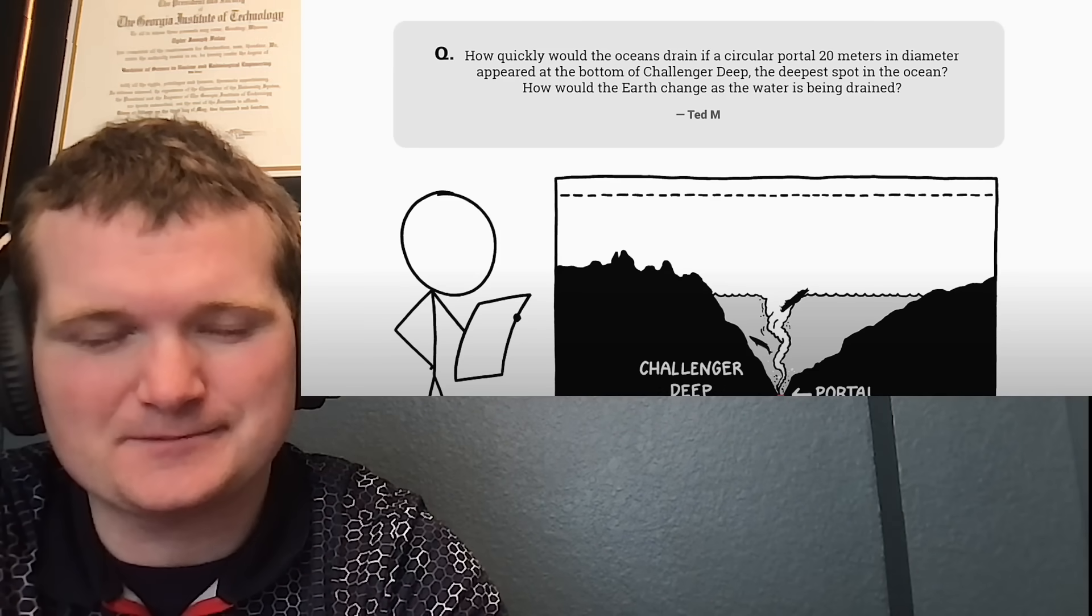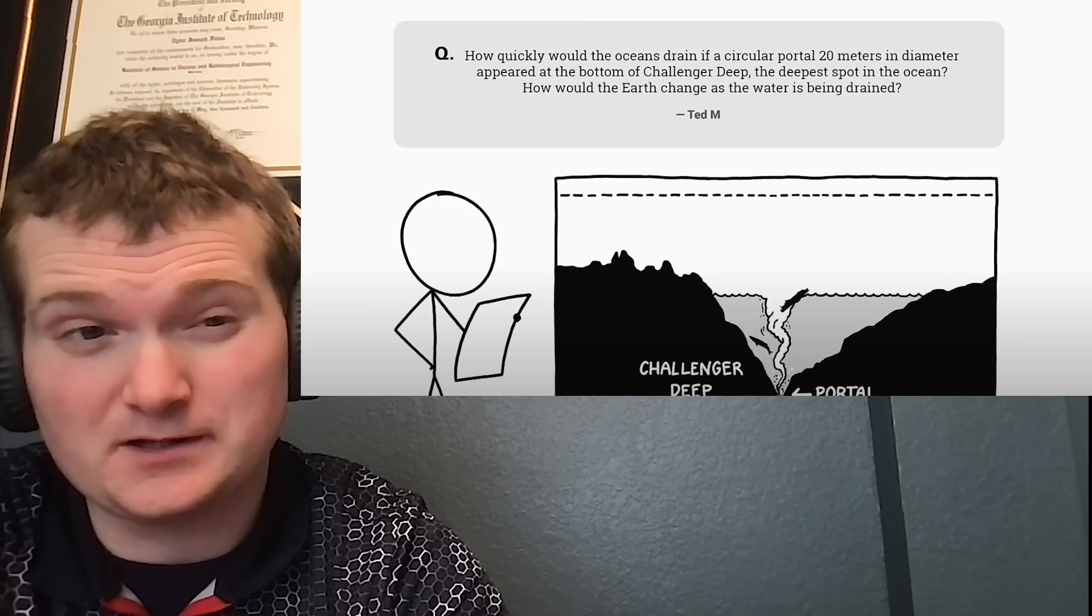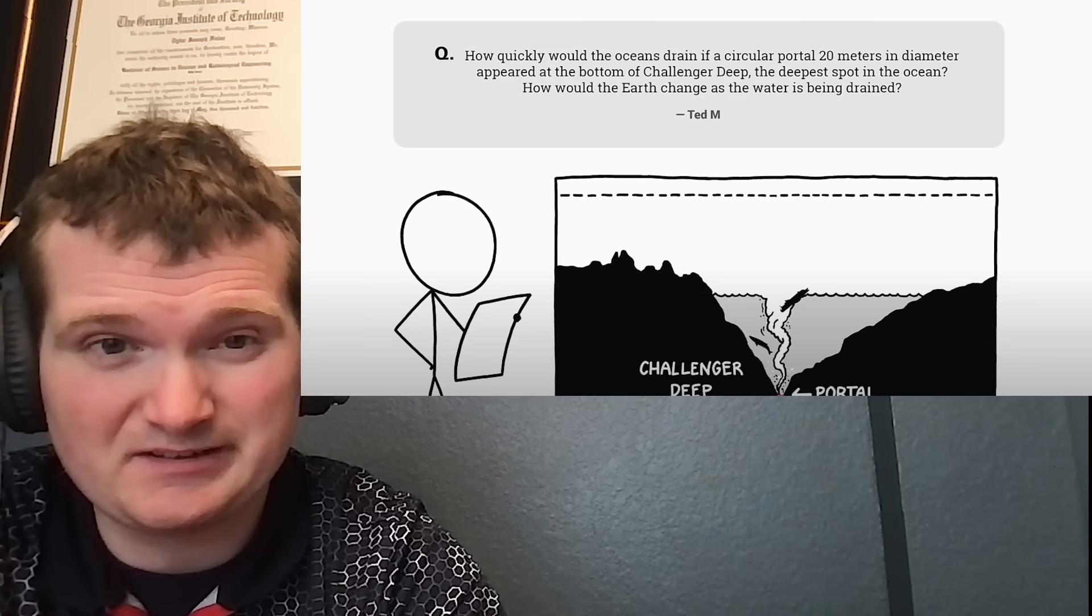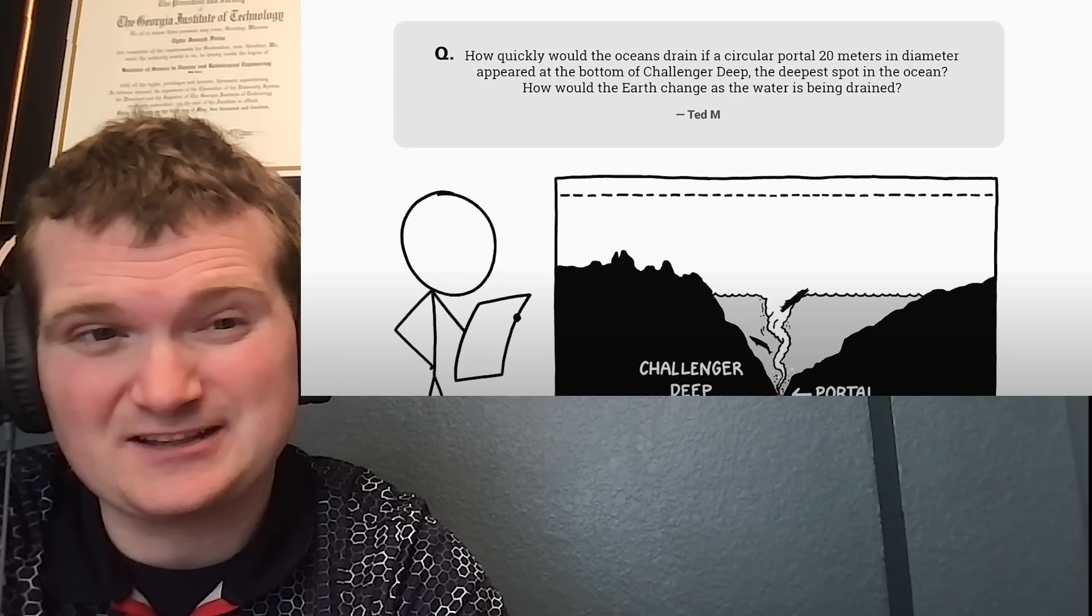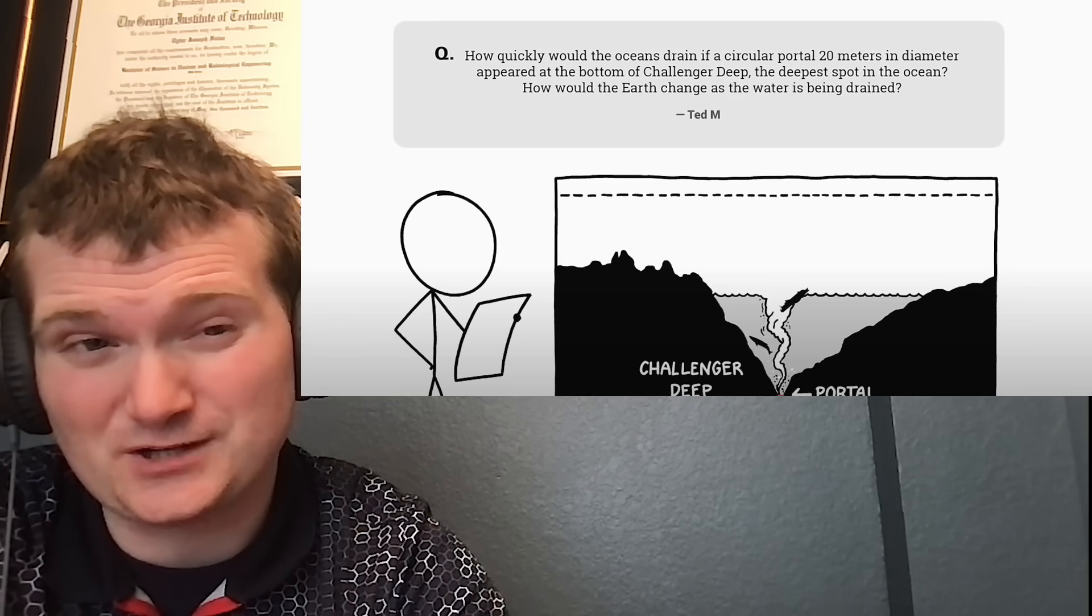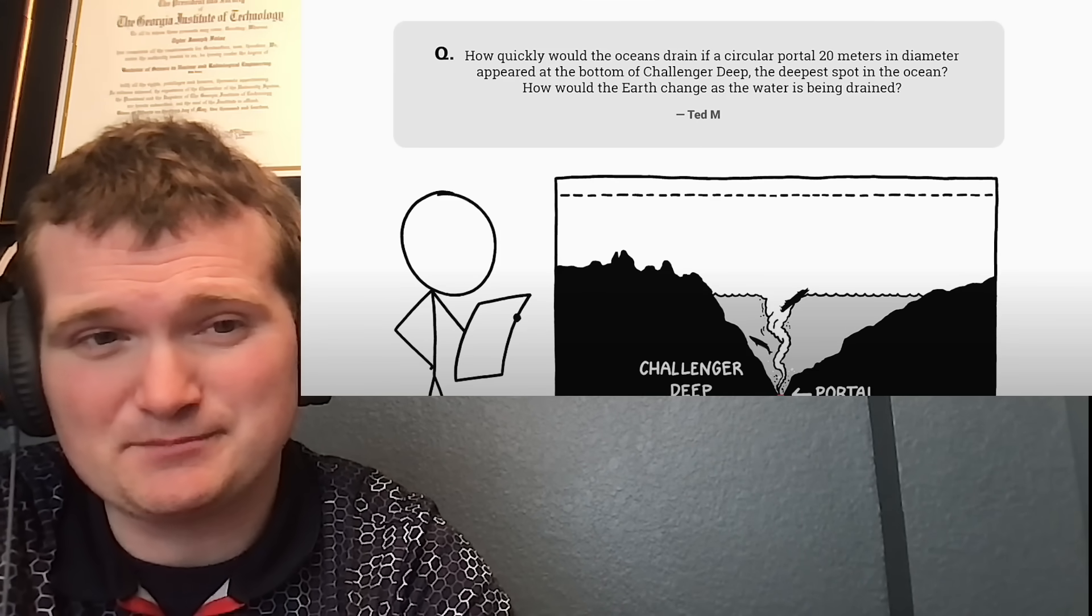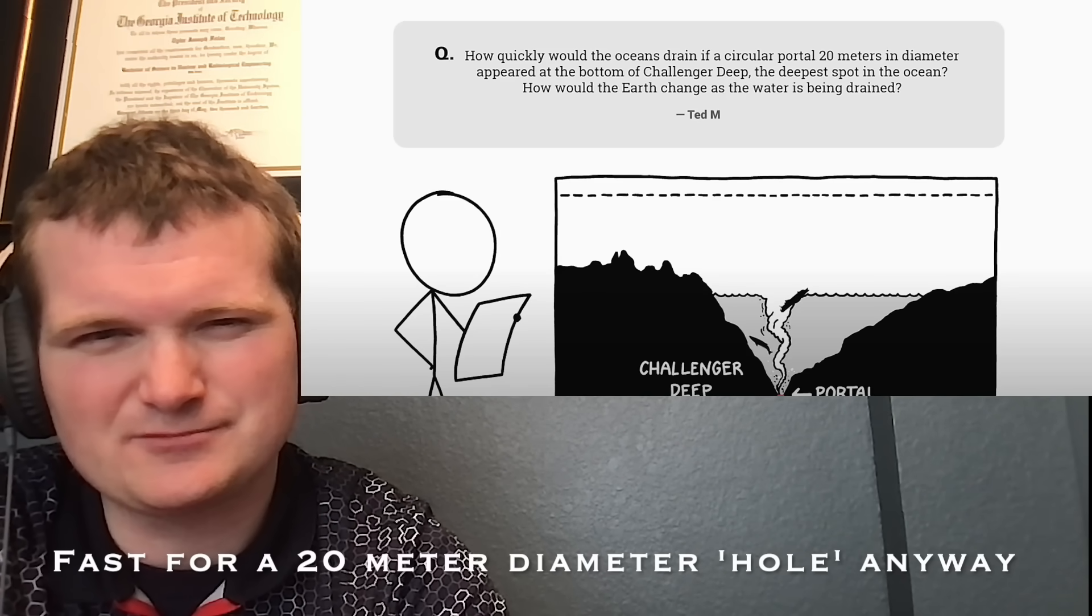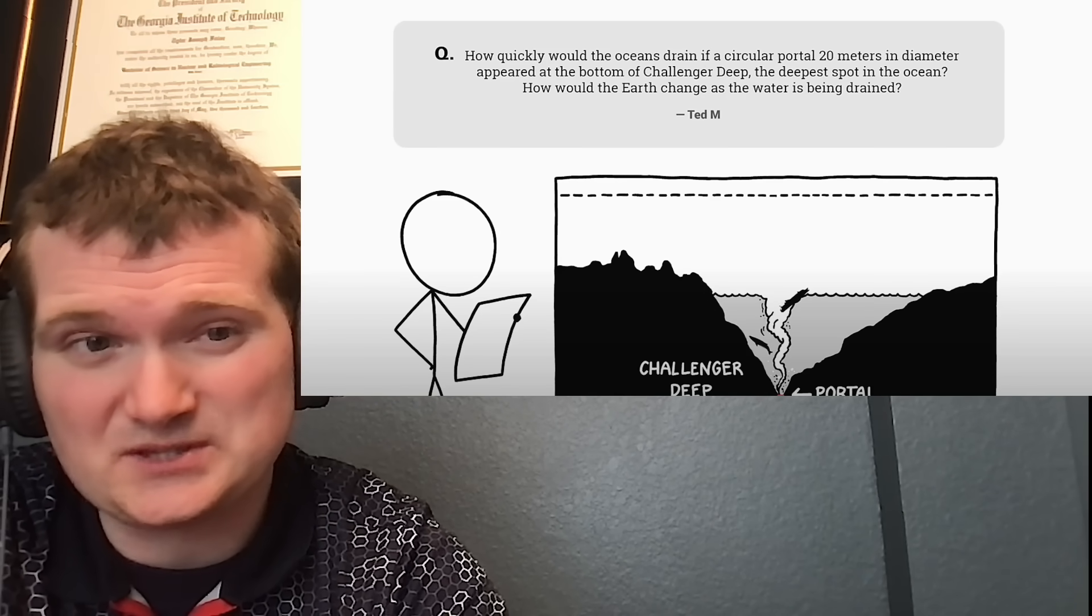We're pulling the plug like the ocean's a really big bathtub. What's the pressure on the opposite side of a portal? At the bottom of the Challenger Deep, it's about a thousand atmospheres or about 16,000 psi—between seven and eight times more pressure than a pressurized water reactor. Assuming it's another planet with Earth's atmosphere or deep space, it's going to be very fast initially and gradually slow down as you lower the water level.